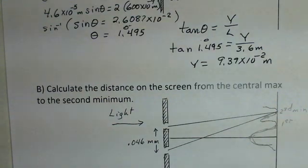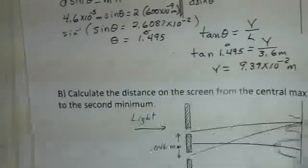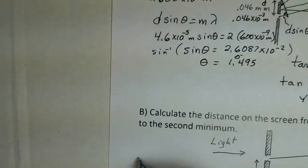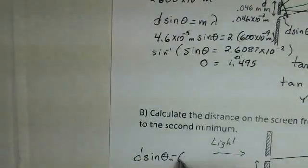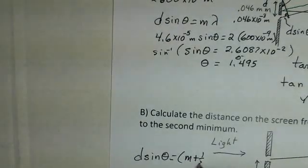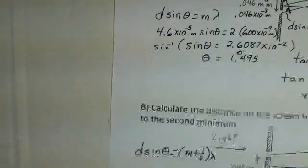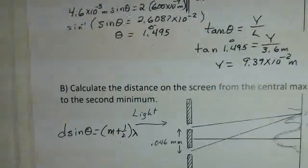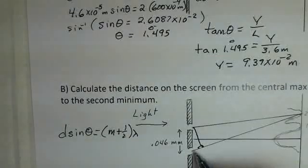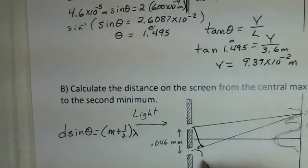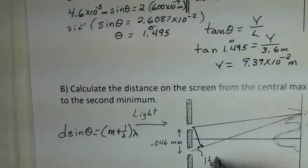The equation that governs our calculation here is d sine theta. It might look familiar. Is m plus 1 half times the wavelength. Now our situation now for the minimum, if I create this little right triangle again, the extra path here for this problem is 1 and a half wavelengths.